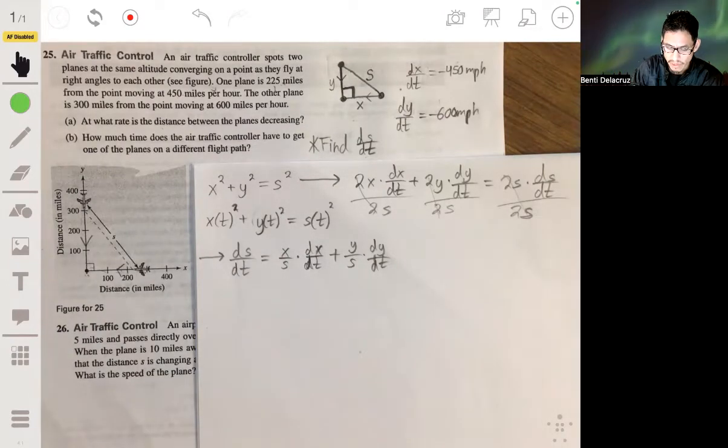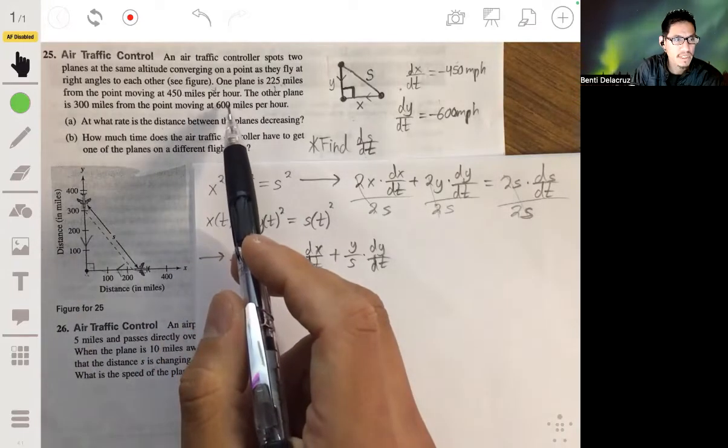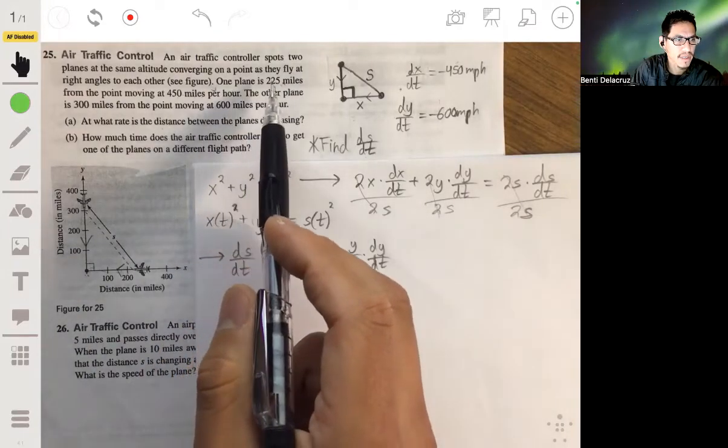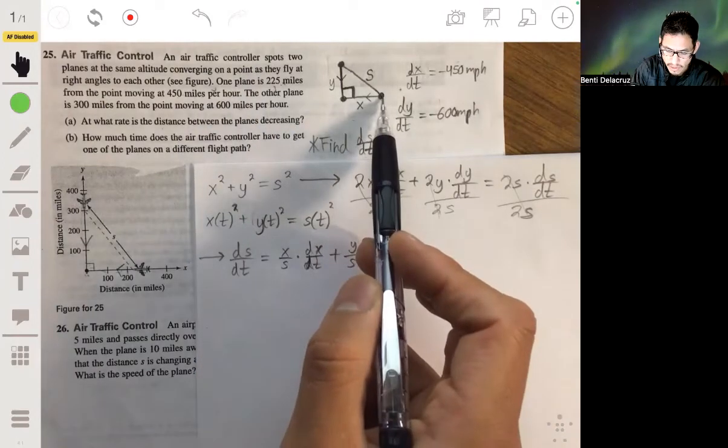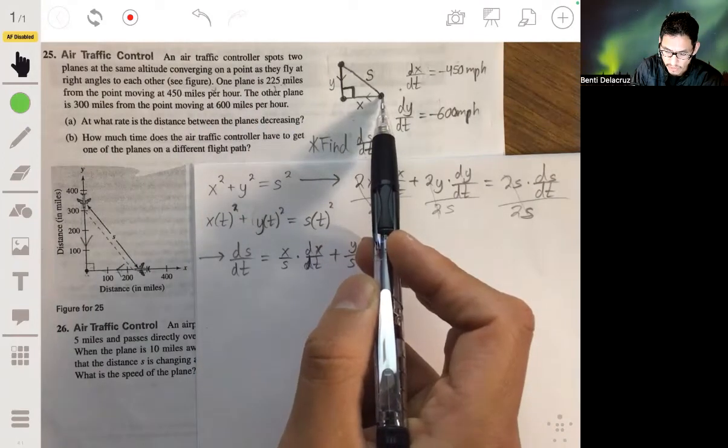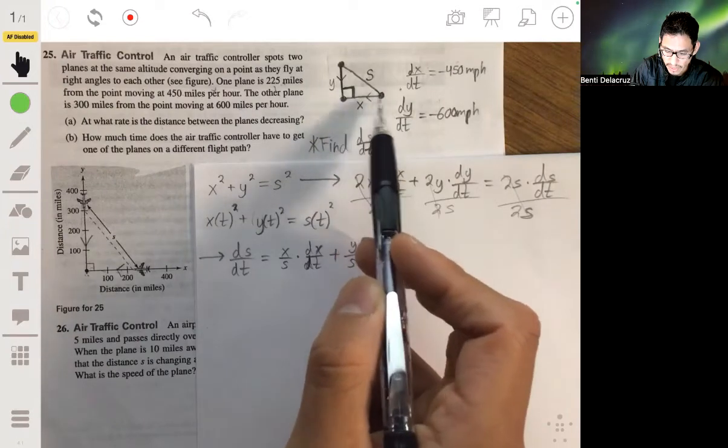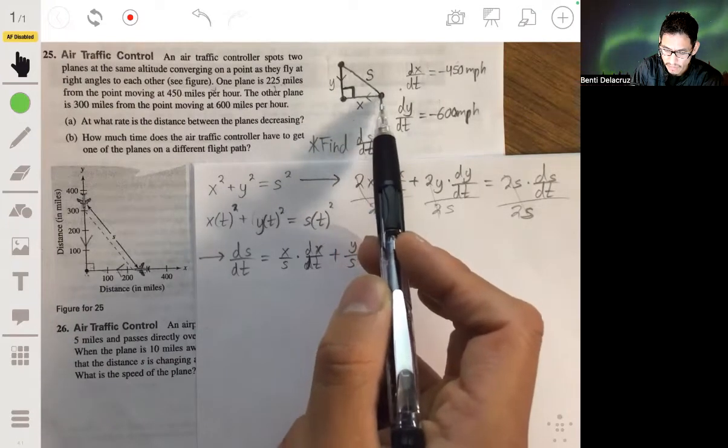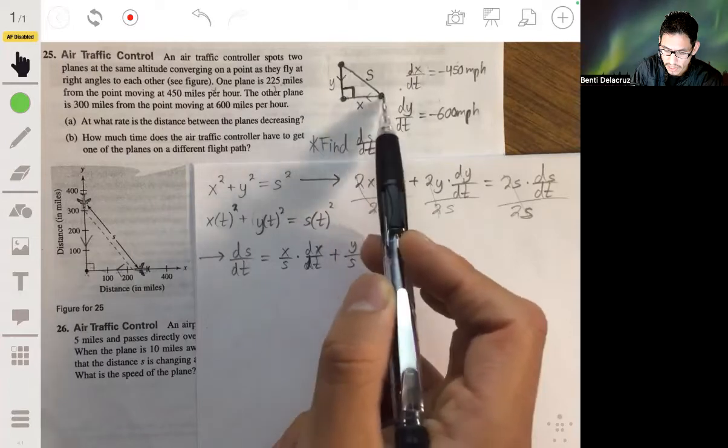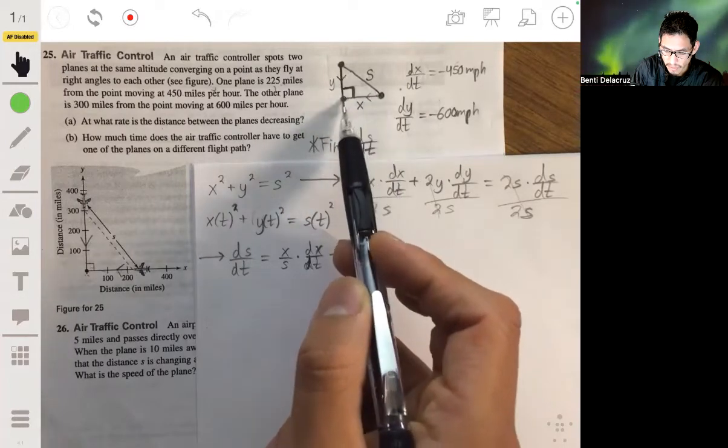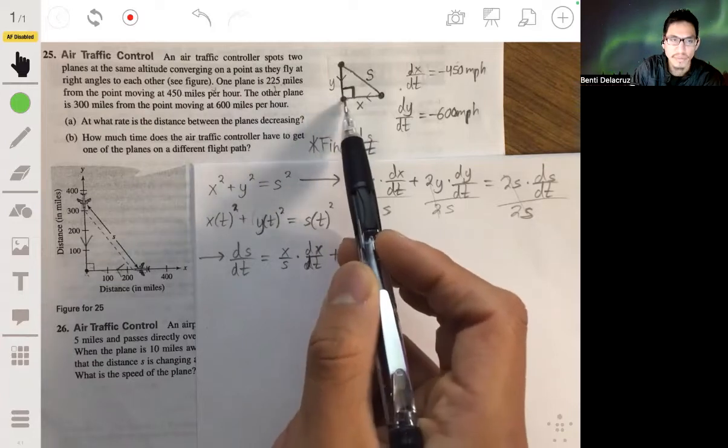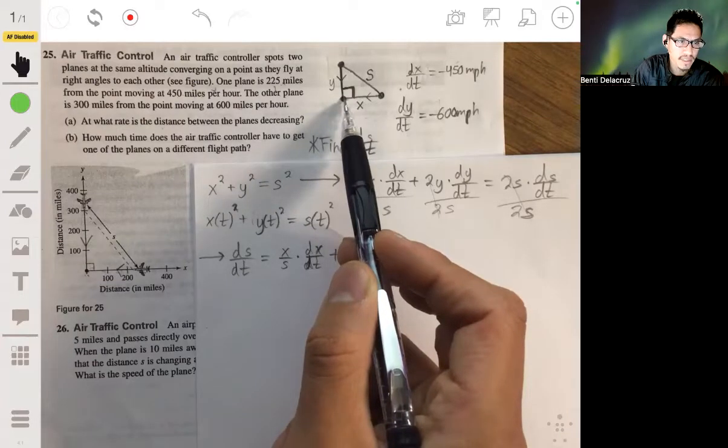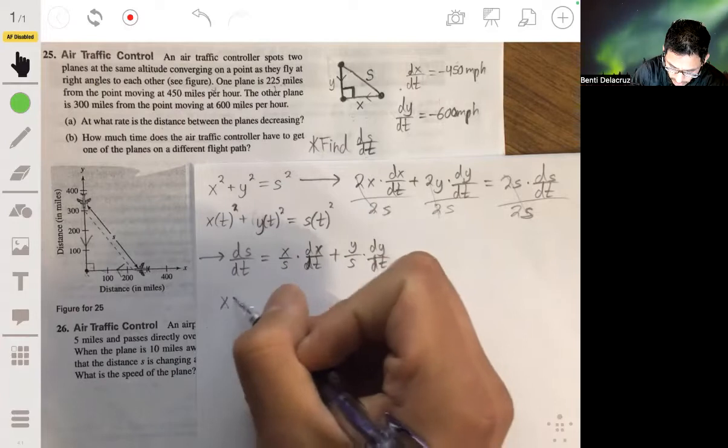Now what we can do is we just go back to the problem. It's told that the plane, this plane here, is 225 miles away. The value of X for this plane is the distance it is from the potential point where they would intersect. So that X is 225.